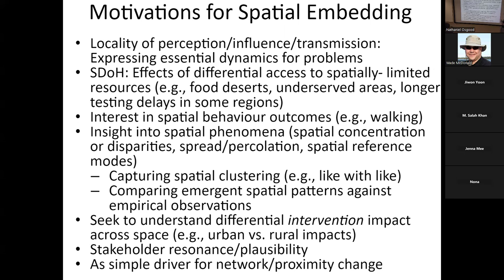Social determinants of health are spatially located — the crime rates, pollution levels, walkability, availability of sidewalks and green space influence my options and ability to engage in physical activity. The local food environment influences my eating patterns. Sometimes we're interested in spatial behavior over space — like walking and green space use. Sometimes we're interested in spatial phenomena like spread between cities or concentration of pathogens in reservoirs, or spatial clustering.